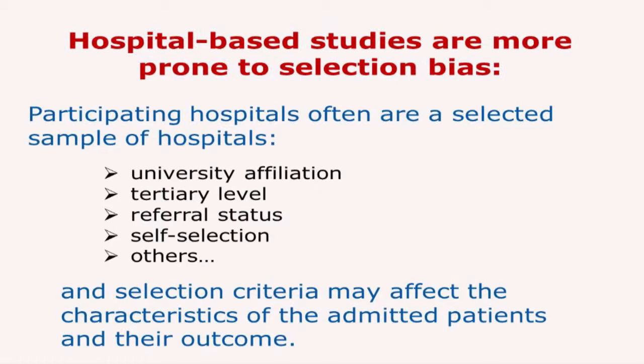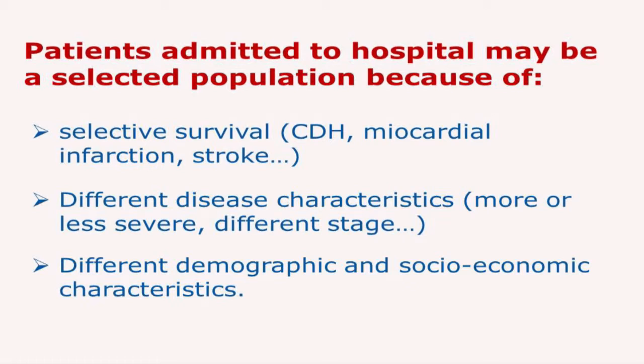Hospital-based studies are more prone to selection bias. First, the hospitals that participate in studies themselves may be selected — they may be excellent centers, tertiary-level hospitals with university affiliation, or they can be self-selected, having agreed to enter a network. This selection criteria may affect the characteristics of patients treated in these hospitals. Additionally, patients admitted to hospitals may be a selected population — for instance, they may have more severe disease stage than cases in the general population, or different demographic and socioeconomic characteristics.